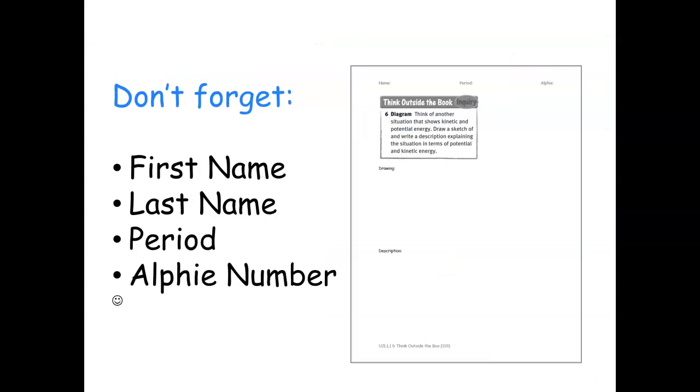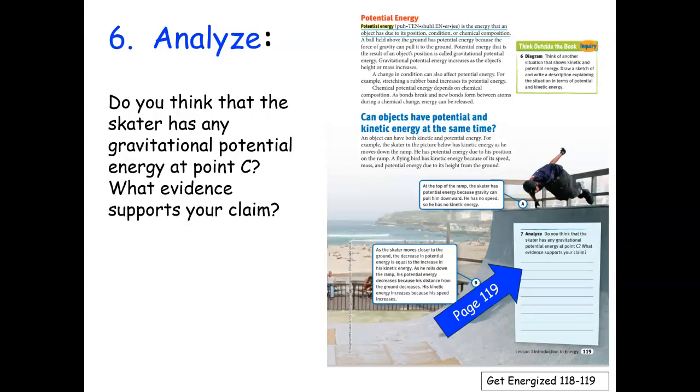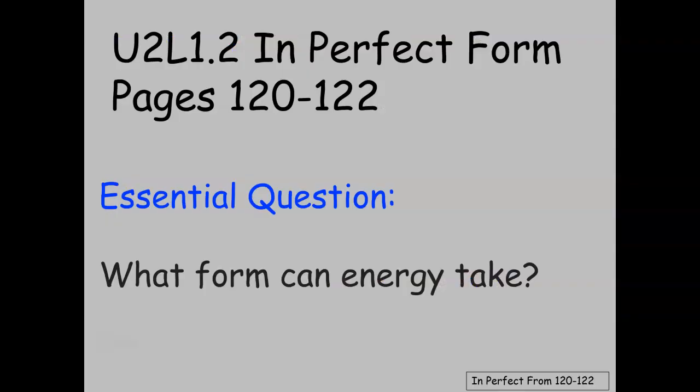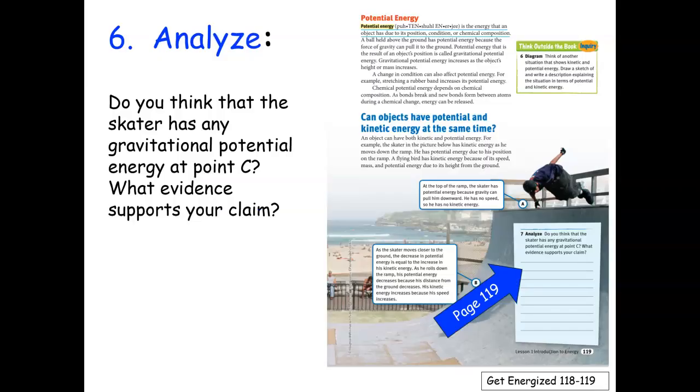Don't forget that you need to put your first and last name, period, and alpha number on your paper. This should actually say number 7, sorry. Number 7 asks you: Do you think that the skater has any gravitational potential energy at point C? You kind of have to put the two pages together to see point C, but point C is in the middle of the skater ramp. You also have to give evidence to support your claim.